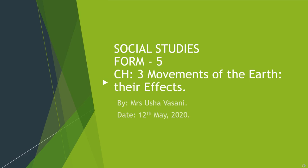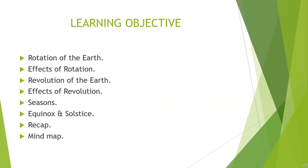Today we are going to learn about the movements of the earth and their effects — that is our chapter number 3. First let me tell you the learning objective of this lesson. We will learn what is rotation and its effects, what is revolution and its effects, seasons, and what is equinox and solstice. Then we will do a short recap of the whole learning, and lastly, as you all know, like every time — a mind map. This learning technique will help you summarize the whole lesson in a short and easy way.